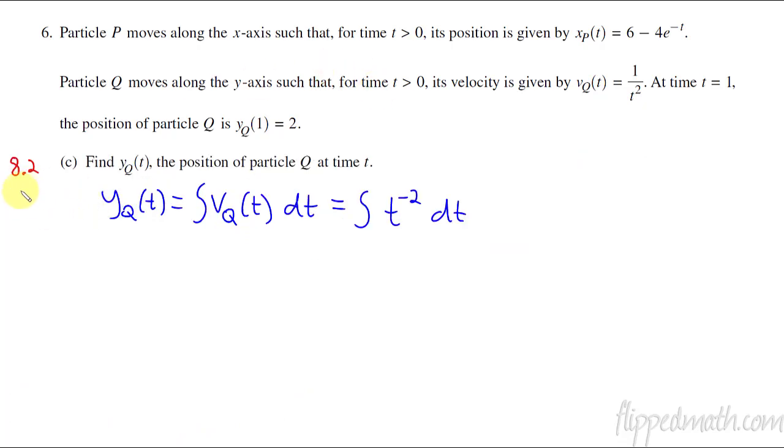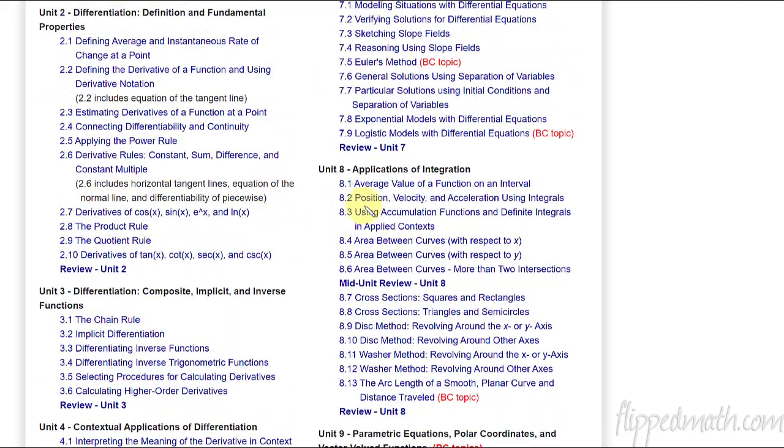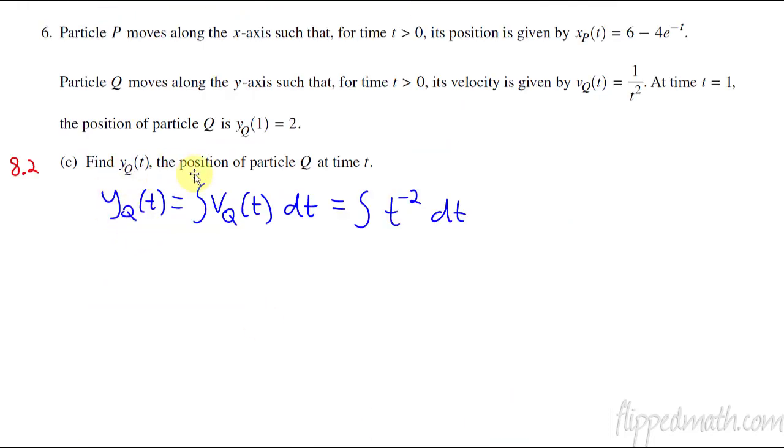For part C, this is lesson 8.2, which is position, velocity, and acceleration using integrals. We're asked to find the position function for particle Q. Particle Q gives us the velocity function. So if we have velocity function, how do we find position? We've got to work backwards, which means taking the integral. So y of t is going to equal the integral of V of t. That is going to be t to the negative 1 divided by negative 1 plus C.